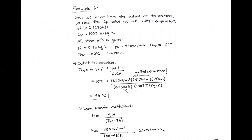For the outlet temperature, using the equation for a surface exposed to constant flux: T-bulk-out equals T-bulk-in plus the flux multiplied by the wet perimeter multiplied by the length, divided by mass flow rate times CP. We get T-bulk-out of 46°C. Since we have a square duct, the wet perimeter is straightforward: 4 × 0.4, which is what's used in the calculation.